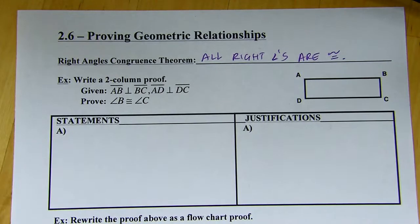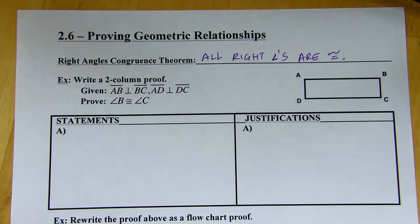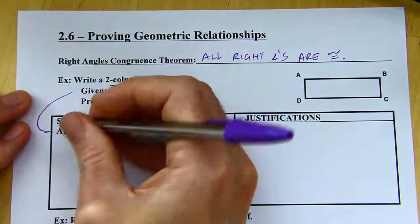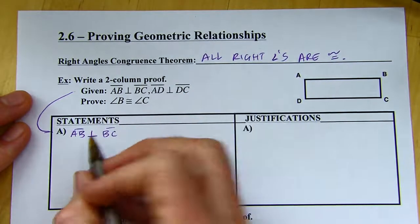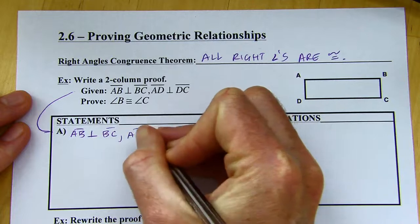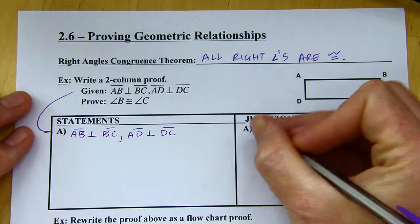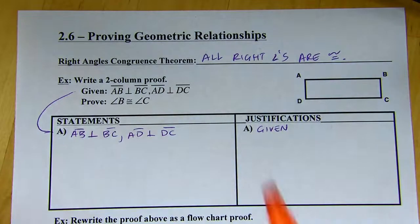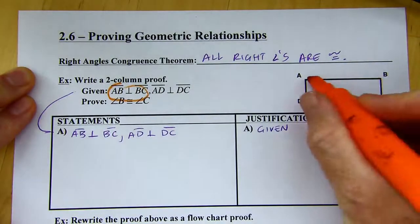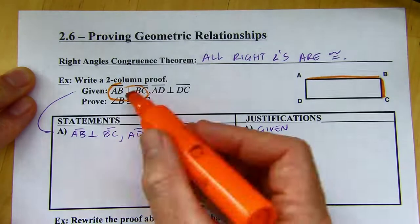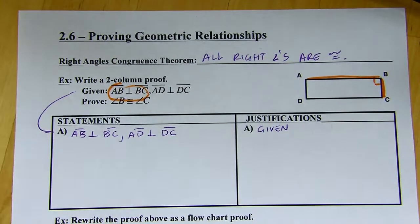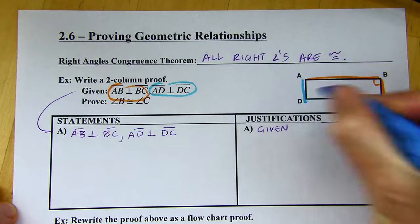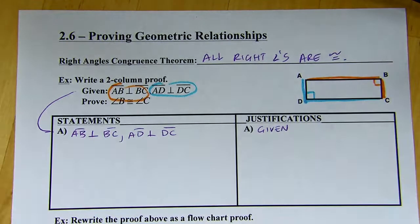Let's go to a two-column proof. The given info — I'm going to copy that down into my first statement, Statement A. Segment AB — this symbol means perpendicular — so that means they're going to be at a right angle. And then AD is perpendicular to Segment DC. That's my given info. So AB and BC are perpendicular, which means that they're at a 90-degree angle — I've got a 90-degree angle right there. And then AD and DC are also perpendicular, so I've got a right angle in that corner.